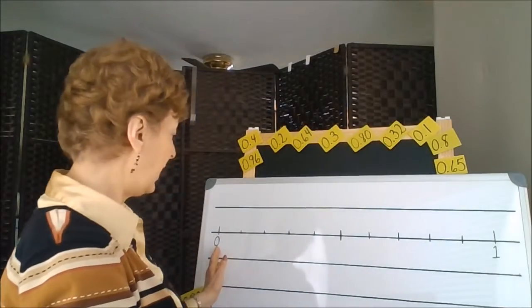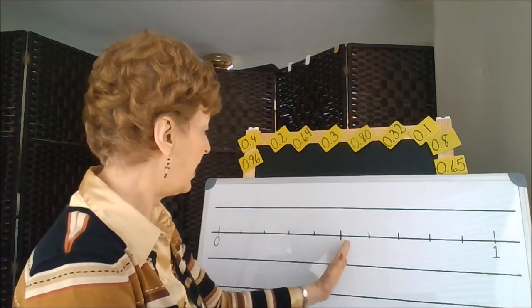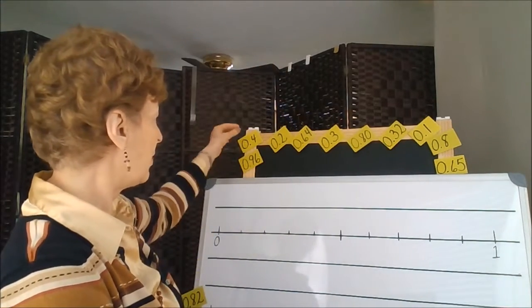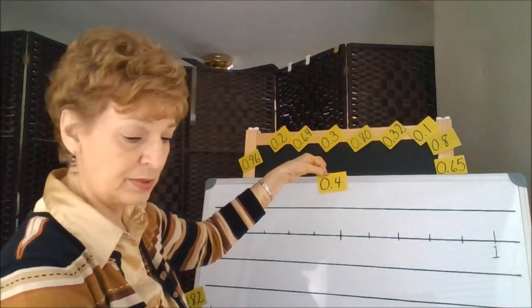0 to 1. We have 10 divisions in it: 1, 2, 3, 4, 5, 6, 7, 8, 9, and 10. And that's where we would place the tenth position of numbers with decimals.